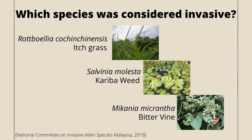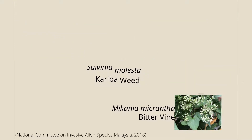Which species are considered invasive? The National Committee of Invasive Alien Species Malaysia has listed a number of alien species. Some examples are Rottboellia cochinchinensis, the itchgrass; Salvinia molesta, the kariba weed; and Mikania micrantha, the bitter vine.